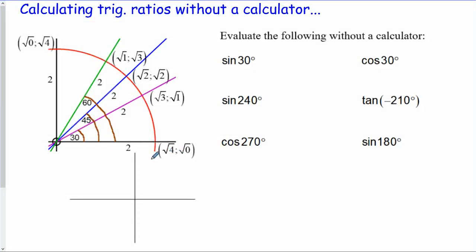It's important to be able to calculate trig ratios without a calculator for special angles. We draw this thing called a fan. It's got angles of 0, 30, 45, 60 and 90 degrees. We have a radius of 2 which is the square root of 4. We label these points: square root of 4, square root of 0. Then as we move around, the x value gets smaller - we reduce it by 1 and increase the y value by 1, keeping the square root signs on: root 3, root 1, root 2, root 2, root 1, root 3, root 4, root 0, root 4.